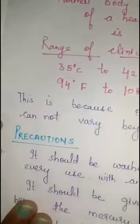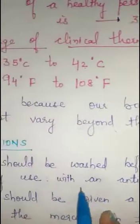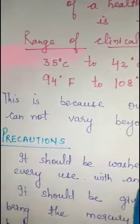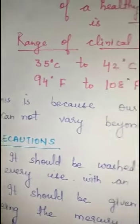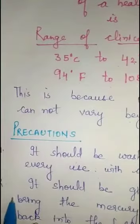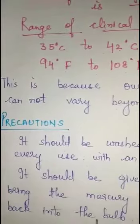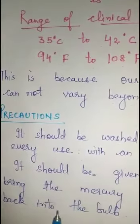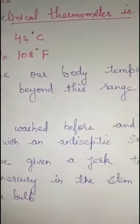Now the precautions for the clinical thermometer. First, it should be washed before and after every use with an antiseptic solution, so that germs from one patient do not transfer to another. Second, it should be given a jerk to bring the mercury in the stem back into the bulb before reuse.